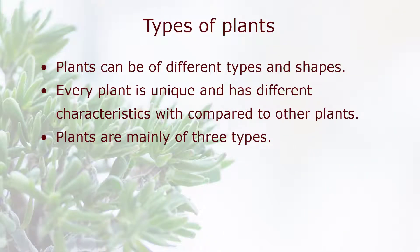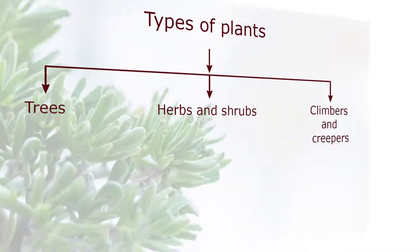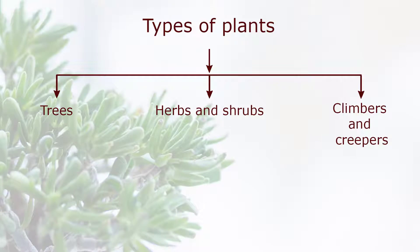Types of plants. Plants can be of different types and shapes. Every plant is unique and has different characteristics compared to other plants. Plants are mainly of three types: trees, herbs and shrubs, and climbers and creepers.